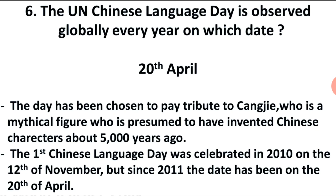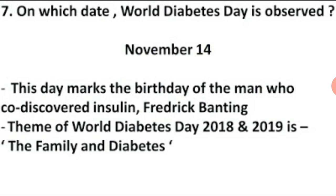Sixth question: The UN Chinese Language Day is observed globally every year on which date? Answer: 20th of April. It is a tribute to Cangjie, a mythical figure who is presumed to have invented Chinese characters about 5000 years ago. The first Chinese Language Day was celebrated in 2010 on 12th of November, but since 2011 the date has been on 20th of April.